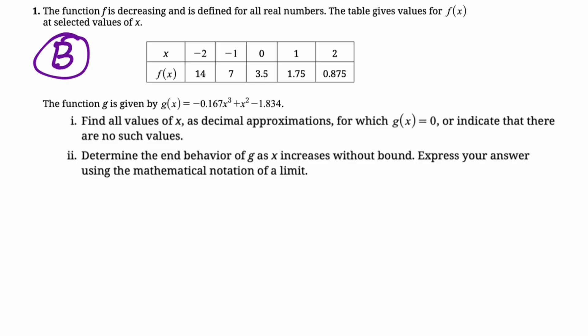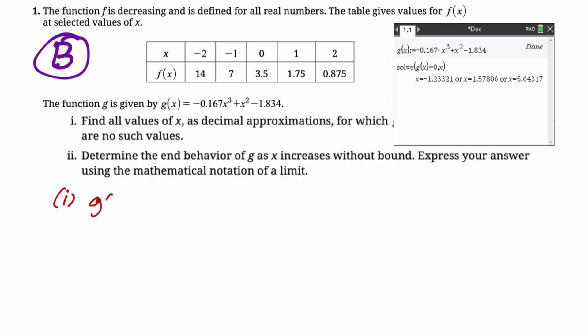Let's look at the next part. So this is b. Find all values of x as decimal approximations for which g(x) equals 0 or indicate that there are no such values. I just use solve on the calculator. So I solve g(x) equals 0. And then there's just these three values. So negative 1.233, x is approximately 1.578, and x is approximately 5.643.